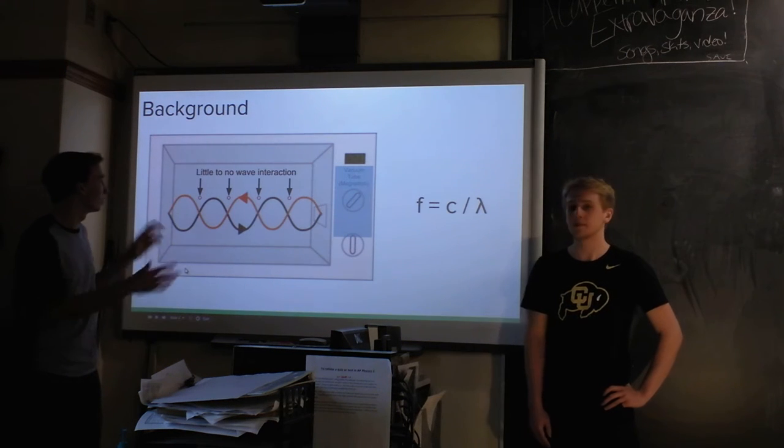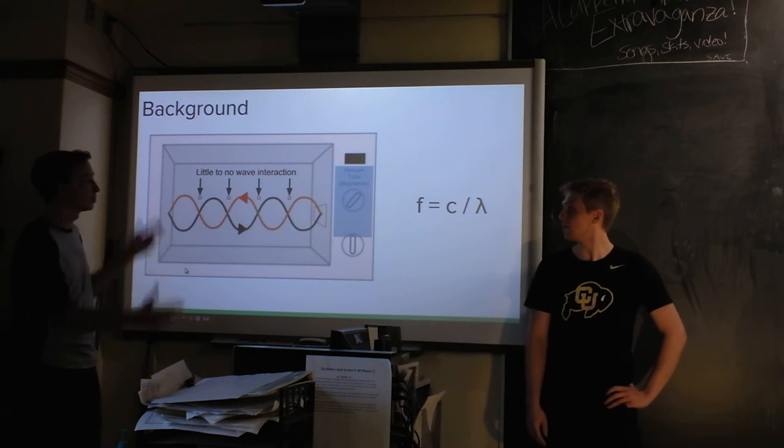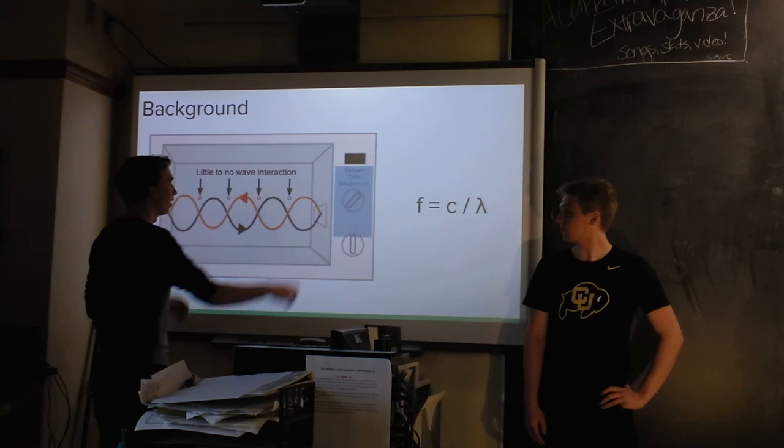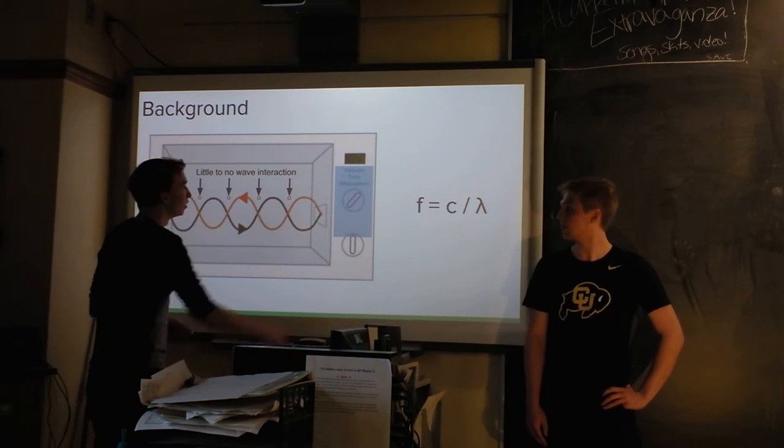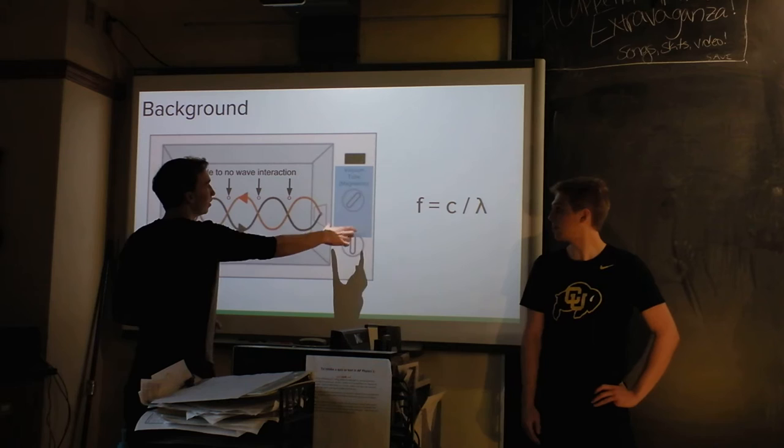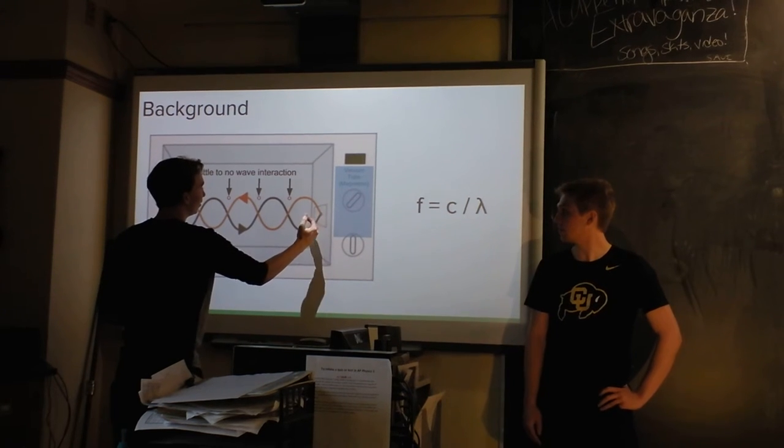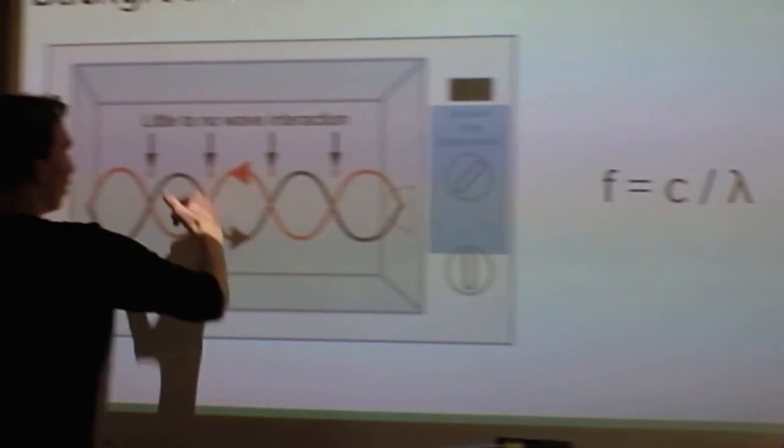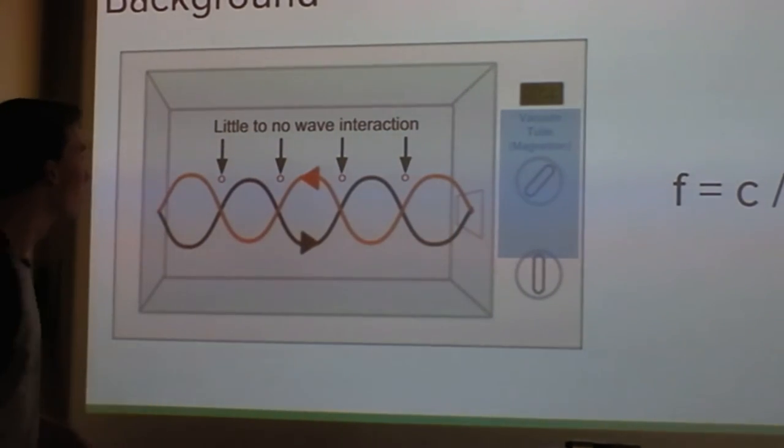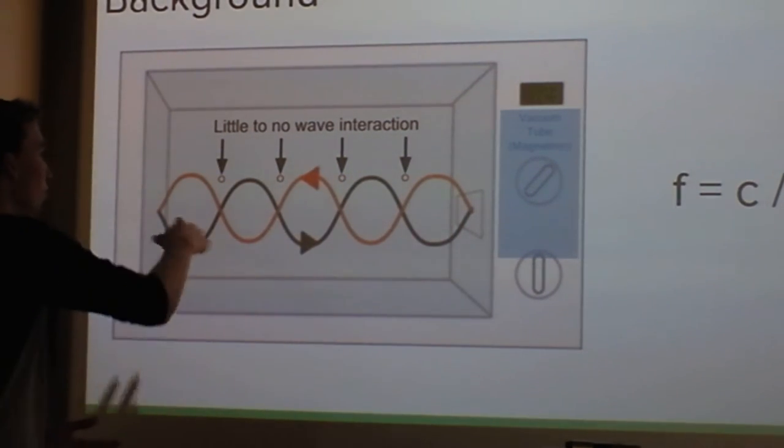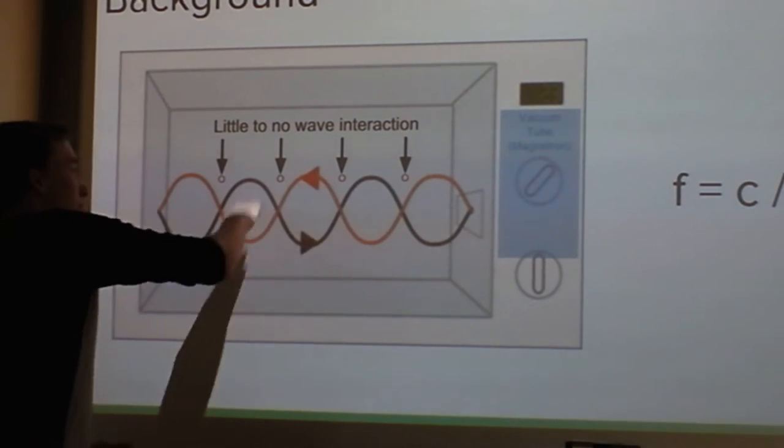So to start off, we looked at how microwaves work, as we saw in the video. So you've got the microwave set up here, you've got this vacuum tube called a magnetron, located on this side of the microwave. It shoots the microwaves out through here, across the microwave.